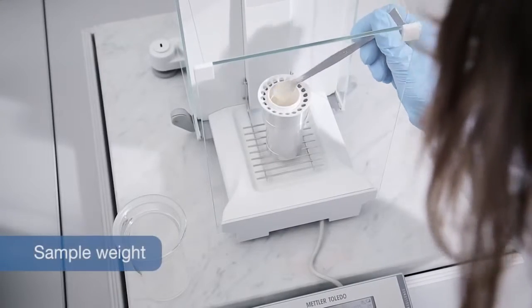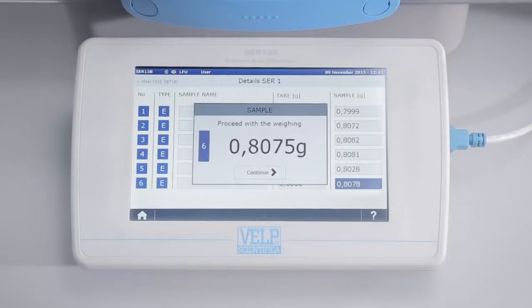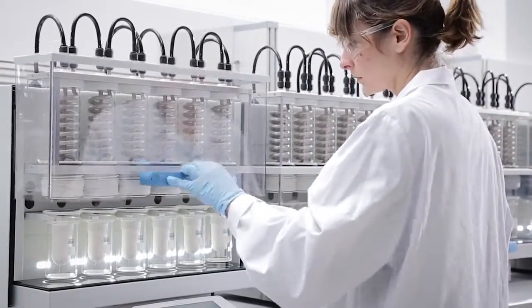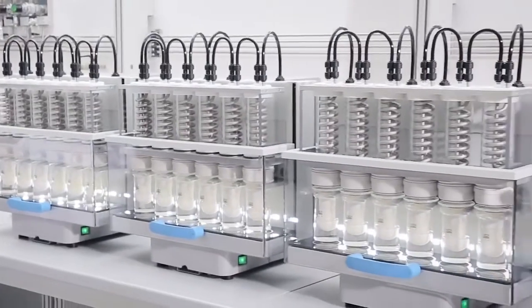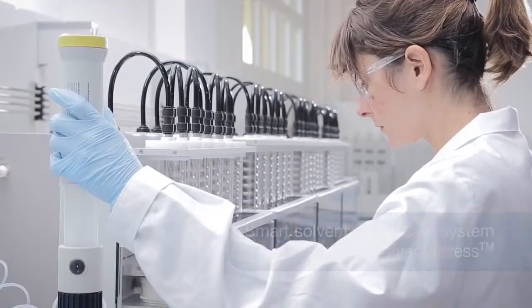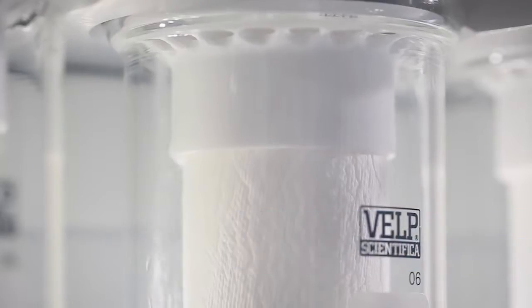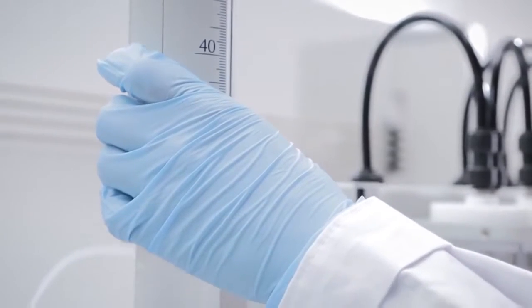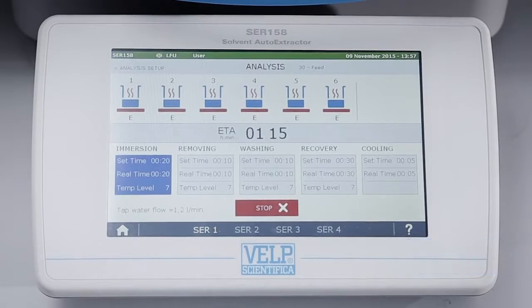Weigh the homogenized sample directly in the VELP extraction thimbles and select the positions required. Position the extraction thimbles, select the method and add the solvent. The automatic VELP solvent dispensing system, Solvent Express, minimizes exposure to the solvent, ensuring operator safety. Then simply press start to begin the extraction process.